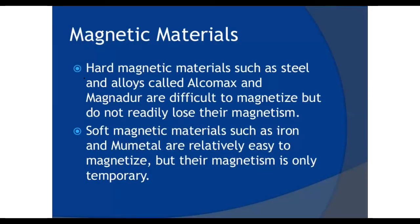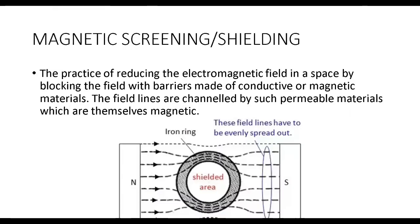Hard magnetic materials are permanent magnets that do not really lose their magnetism, but soft magnetic materials have only temporary magnetic properties. We're now going to discuss how we can use magnets in our daily lives.